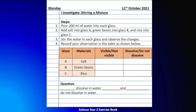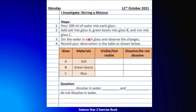Alright everyone, as usual, we need to record our investigation. Please get ready with your Science C2 exercise book. Write down the date and the title of the investigation, which is 'Stirring a Mixture.' Next, copy all of these steps: Step 1 — pour 200 ml of water into each glass. Step 2 — add salt into Glass A, green beans into Glass B, and rice into Glass C. Step 3 — stir the water in each glass and observe the changes. Step 4 — record your observation in the table as shown below.